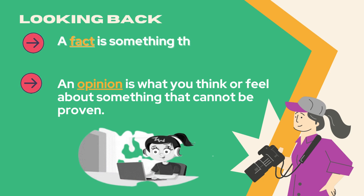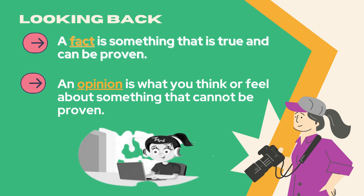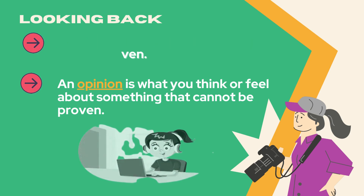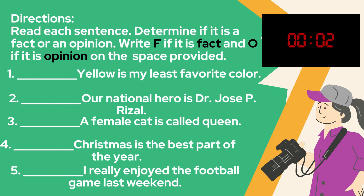Let's review first about fact and opinion. A fact is something that is true and can be proven. An opinion is what you think or feel about something that cannot be proven. Now let's answer the activity below. We have 60 seconds to do this activity. You need to read each sentence to determine if it is a fact or an opinion. Write F if it is a fact and O if it is an opinion on the space provided.